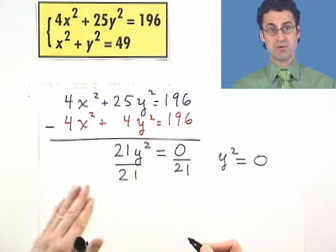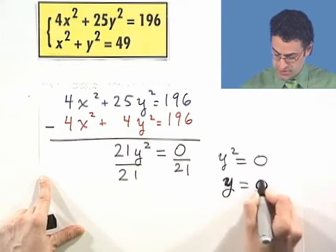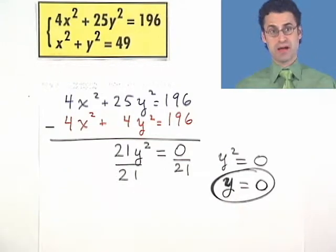And I see that this tells me that y squared equals 0. There are technically two answers, y equals 0 and y equals 0. They're really the same, so I just see y equals 0. So there's the y value. What about the x value? How can I find the x value?